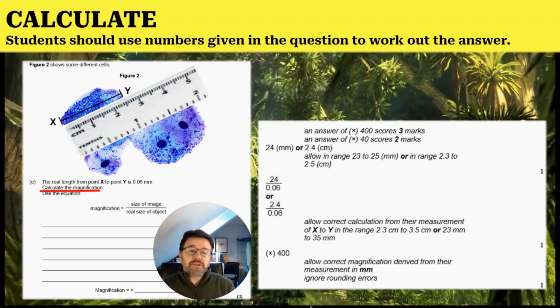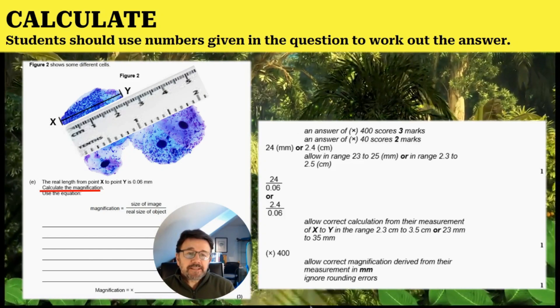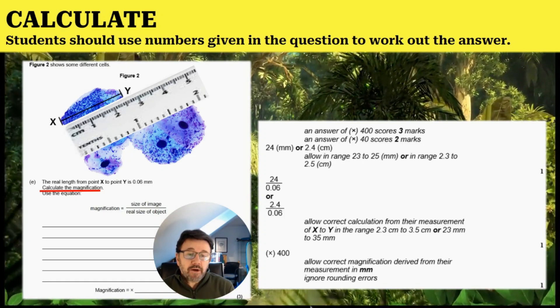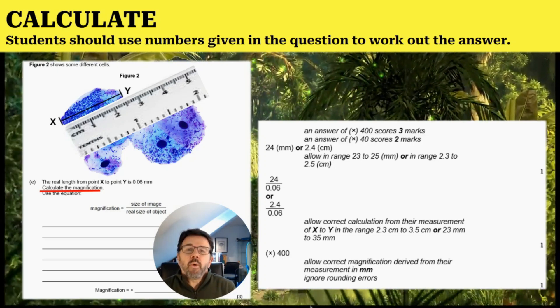That will give you a magnification of times 400. Now if you forget to convert it to millimeters, you still get two marks for times 40. This is why you should always show your workings—never ever just put the answer.